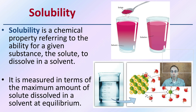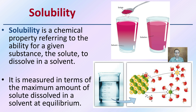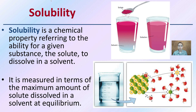Focusing on our household items, one common test that can be done is simply solubility. Solubility is a chemical property referring to the ability of a given substance — the solute — to dissolve in a solvent. It's measured in terms of the maximum amount of solute dissolved in a solvent at equilibrium. For example, how much sugar can you put in water before it falls out of solution?